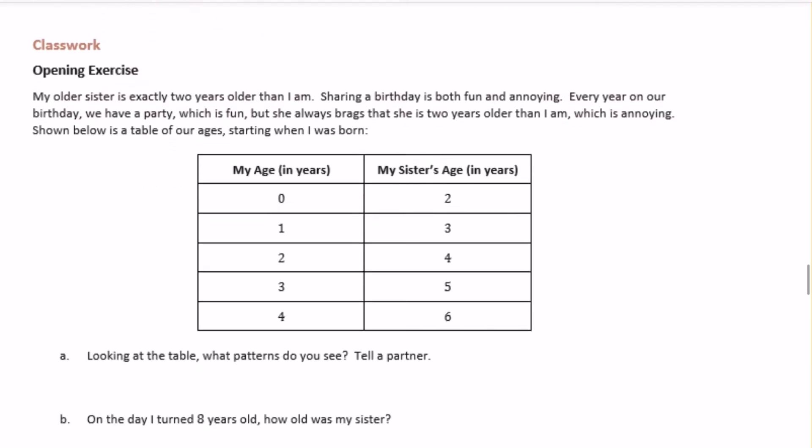Opening exercise. My older sister is exactly two years older than I am. Sharing a birthday is both fun and annoying. Every year on our birthday we have a party, which is fun, but she always brags that she is two years older than I am, which is annoying. Shown below is a table of our ages, starting when I was born.